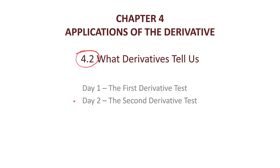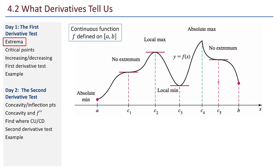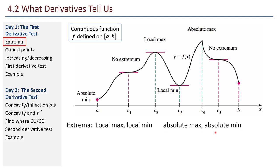Now, this isn't just like these are two derivative tests labeled first and second. I'm actually using the first derivative to find highs and lows of a function, and in day two, I'm using the second derivative to do the same thing. Here is an example of a continuous function defined over a closed interval from a to b. This graph has highs and lows — it has absolute maxes and absolute mins, local maxes, local mins. There are two kinds of extrema: local max, local min, absolute max, absolute min.